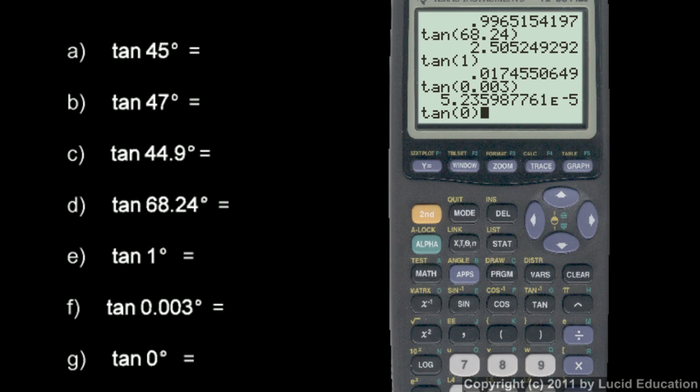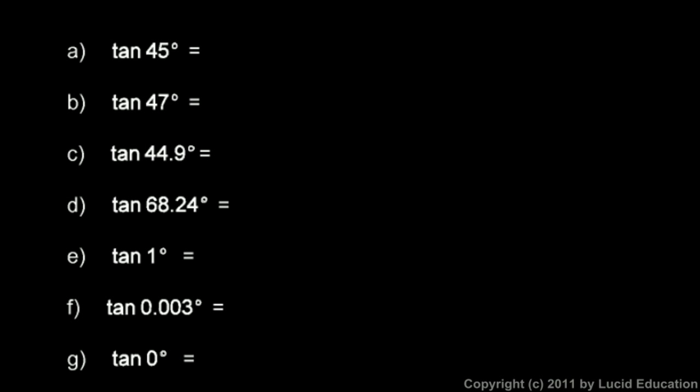Okay, let's put those values in. You can write these in. The tangent of 45 was 1. And I'm going to round these. That was 1.0723, 0.9965, 2.505, 0.175.